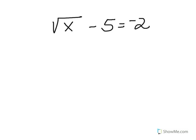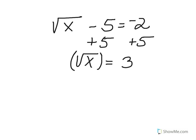In order to solve this problem, the first thing we are going to do is add 5 to both sides. By adding 5 to both sides using the property of equality of addition, we get the square root of x is equal to 3. In order to solve this, we need to square both sides.